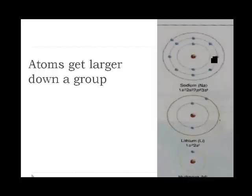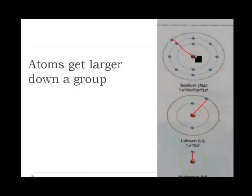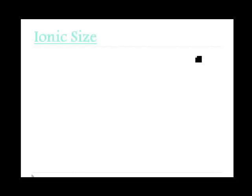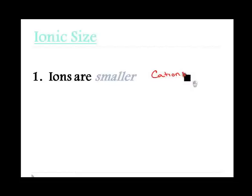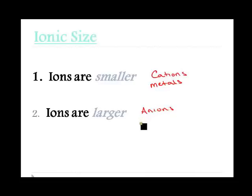Atoms get larger down a group when energy levels are added. This is because the distance from the nucleus is more important than increasing the nuclear charge. We can see that hydrogen has a small distance, lithium is slightly bigger, and sodium is very large. Similarly, we can look at ionic size — the size of the ions. Ions tend to be smaller when atoms lose electrons; these are the cations. Metal ions are going to be smaller than non-metal ions. Non-metals are anions and tend to be larger.